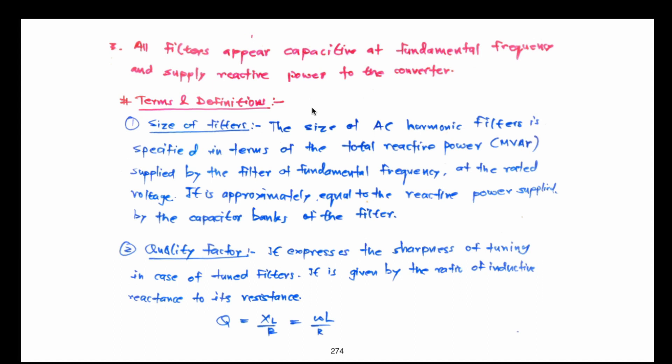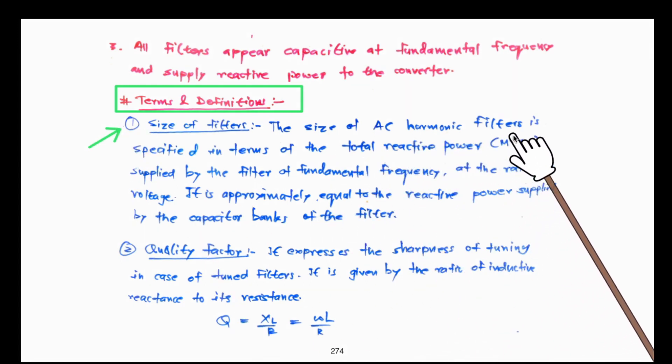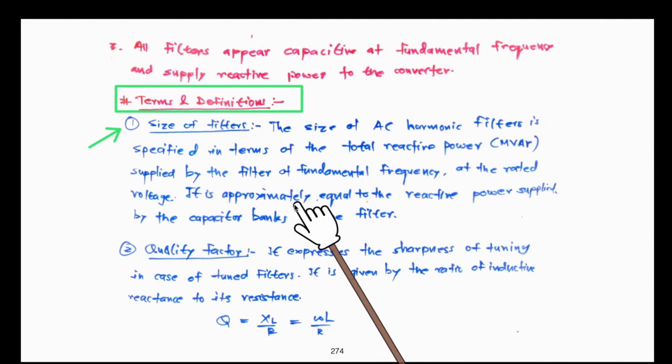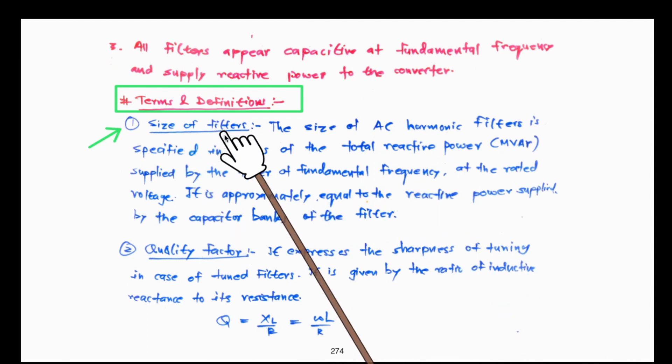Before going through the different types of filters and their design, let us consider some terms and definitions that will be helpful in understanding and developing proper filter designs. The first term is the size of the filter. The size of AC harmonic filters is specified in terms of the reactive power supplied by the filter at fundamental frequency.